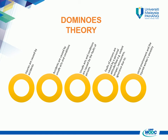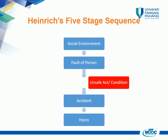This will lead to unsafe acts and unsafe conditions. Because 88% of all accidents happen due to unsafe acts — for example, static equipment without warning and removal of machine guarding — in accident prevention the bull's eye of the target is in the middle of the sequence, which is an unsafe act of a person or mechanical or physical hazards. Thus, by removing the third stage, controlling workers' behaviour should solve the safety problems.